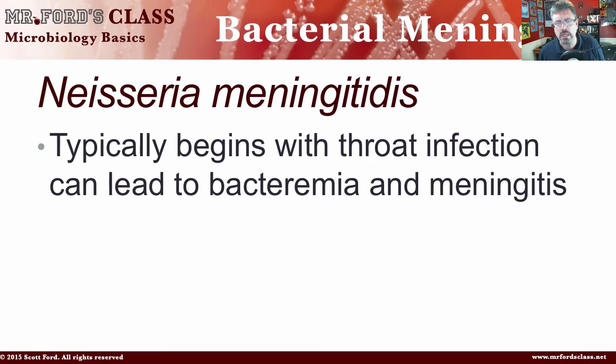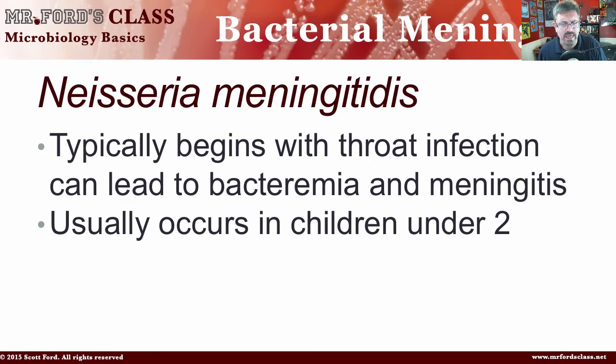How does it begin? How does it present itself? It typically begins with a throat infection — you get the sore throat. It can lead to bacteremia and meningitis. It usually occurs in children under two years old, and we also see sporadic outbreaks in college students. That goes with that whole close contact situation — if your roommate has it and you're constantly next to them, it can cause that.